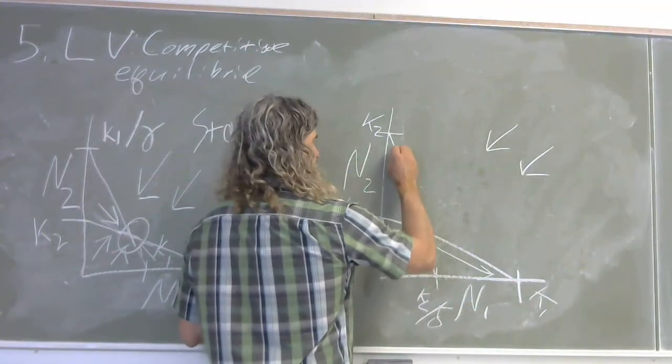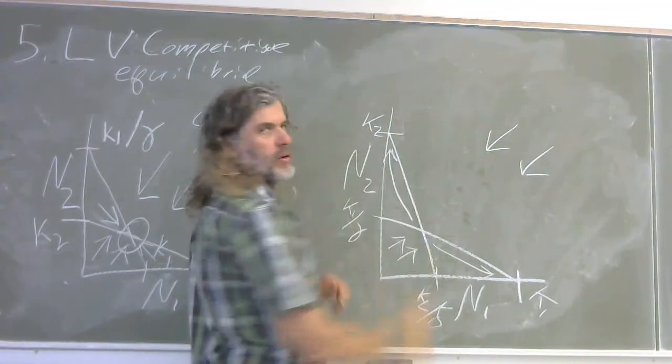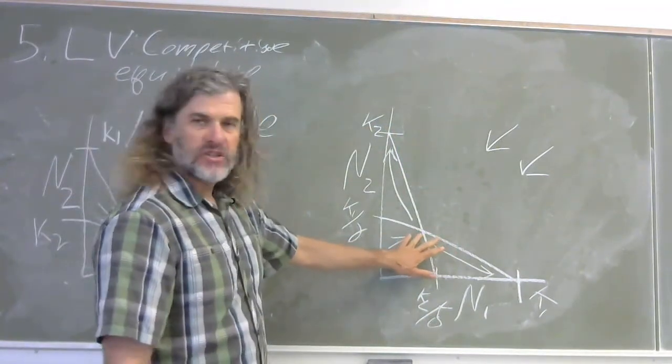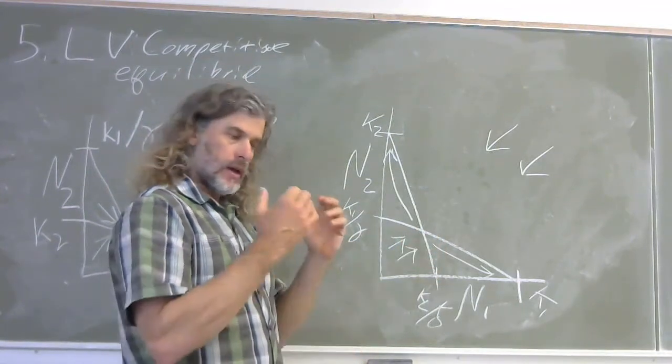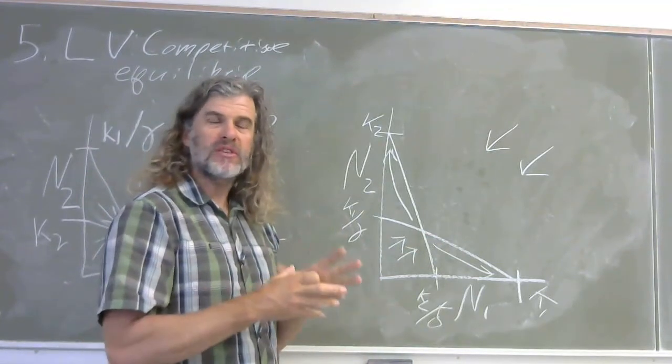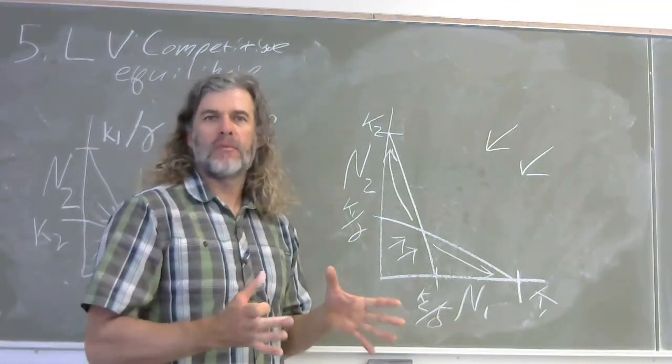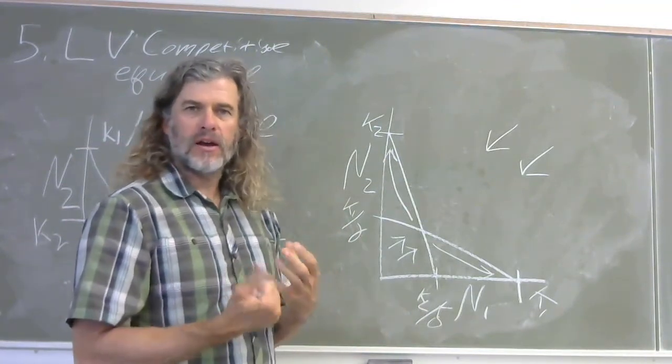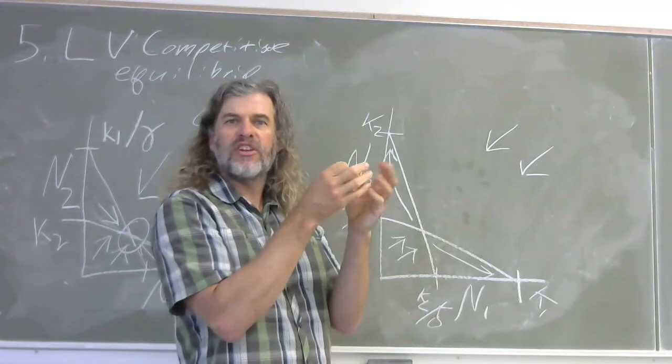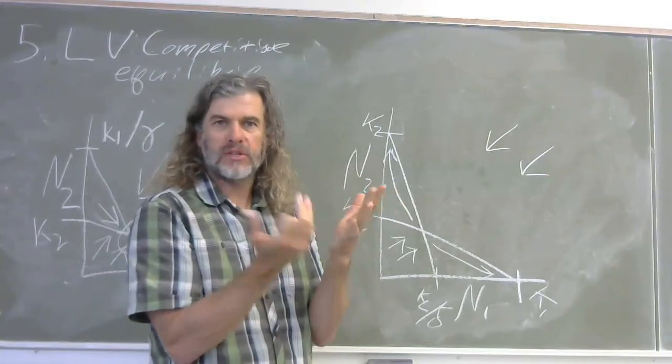Likewise, when we're in this phase space, the system is going to grow towards the carrying capacity of species two. At this intersection, we have what's called an unstable equilibrium. It's an equilibrium. It's a place where both species are coexisting, but it's coexistence that's akin to standing on the head of a pin. There's a balance there, but it's in some sort of strange kind of infinity space where there is a balance there, but it's so small. It's infinitesimally small.